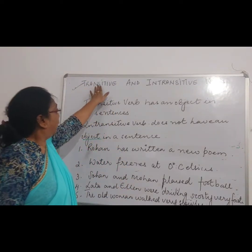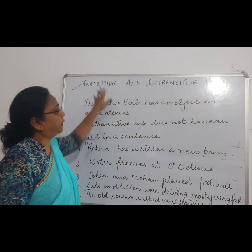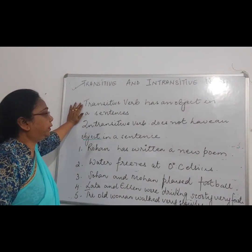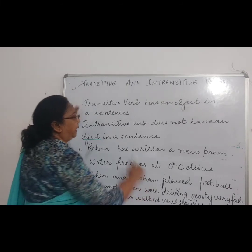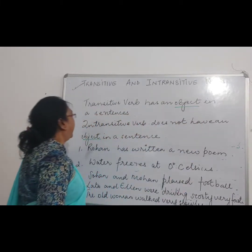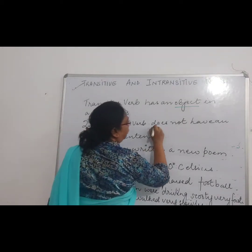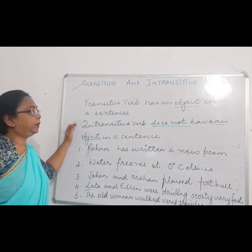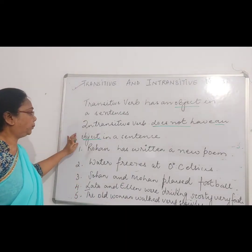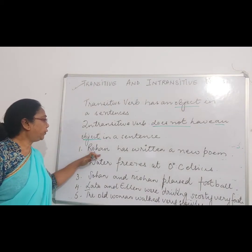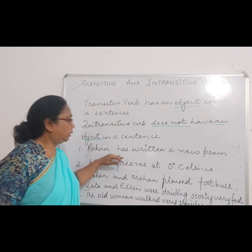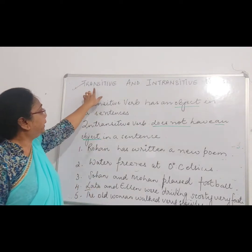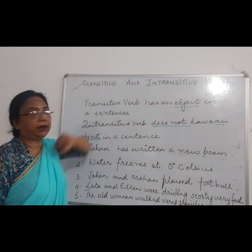Transitive and intransitive verb — they are also a kind of verb. In a transitive verb, a sentence has an object, whereas an intransitive verb does not have an object in a sentence. If a question is given to you like: pick out and underline the verb and write whether the sentence is transitive or intransitive verb — this is how you do it.